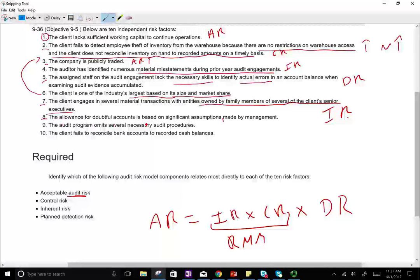Eight, the allowance for doubtful accounts is based on significant assumptions made by management. Here we are making assumptions. In every account where we have to make assumptions, estimation, judgment, the account becomes inherently risky.